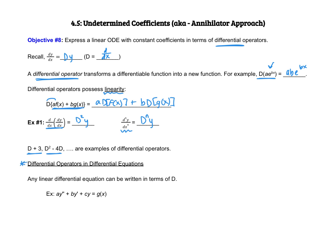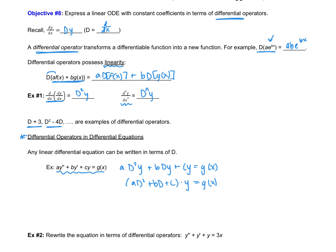Recall from the first video that we can rewrite differential equations using differential operators. For example, the equation a·y'' + b·y' + c·y = g(x) can be written as a·D²y + b·Dy + cy = g(x). On the left side we can factor out y, giving us (aD² + bD + c)·y = g(x), where aD² + bD + c is a differential operator.